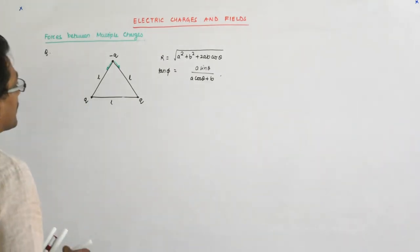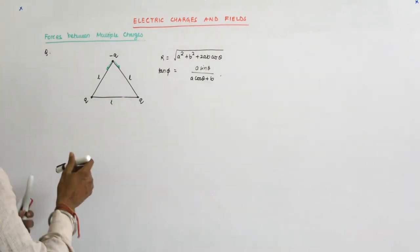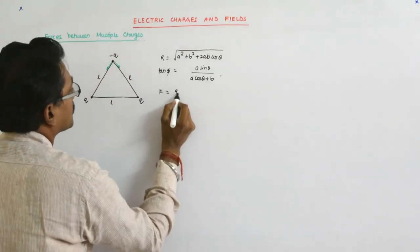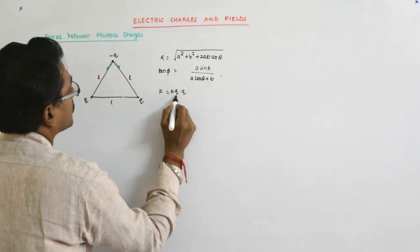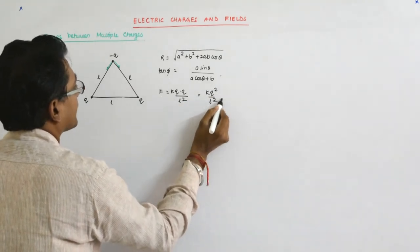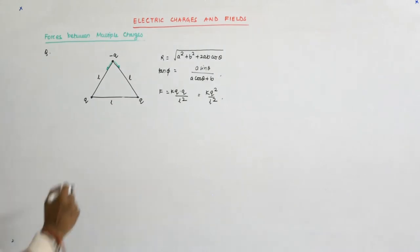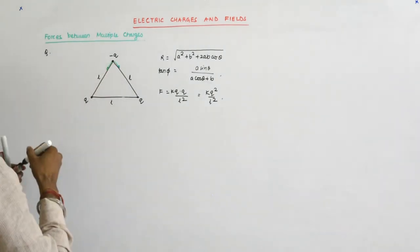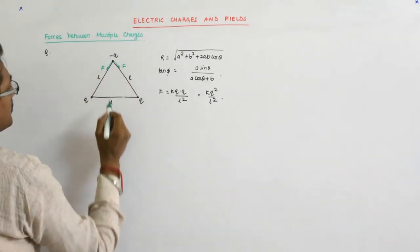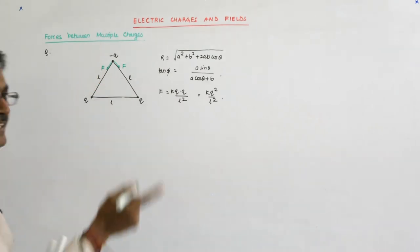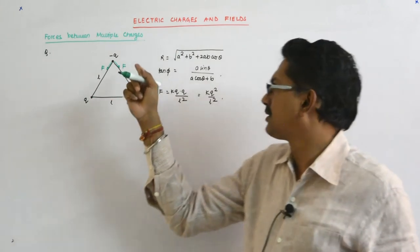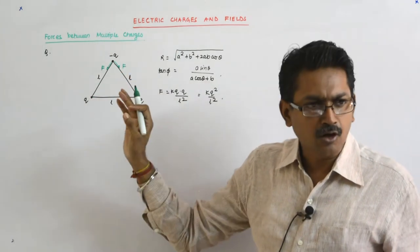So what is the magnitude of that force? The magnitude of that force is kq into q upon l square. So that is kq square upon l square. So this is a force F. No, because negative sign is taken into account. We are not considering the negative sign because that is taken into account by the way they are oriented. So it is taken care of.